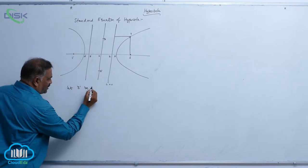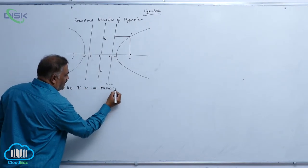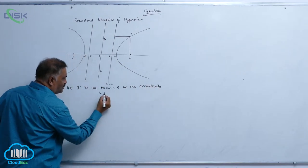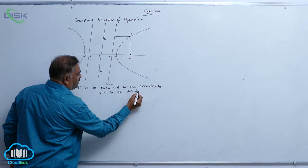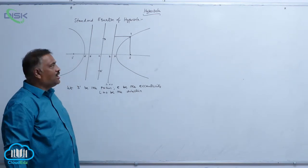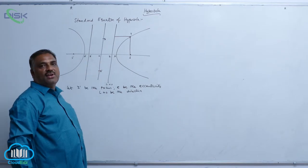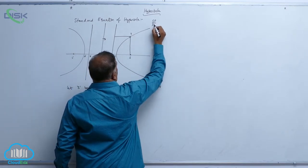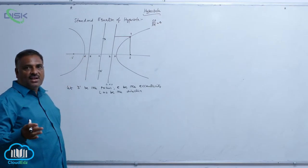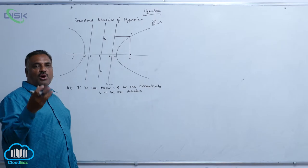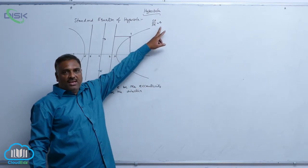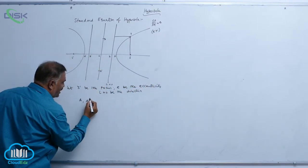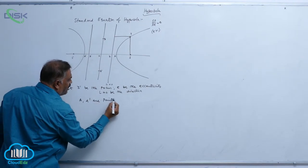Let S be the focus, E be the eccentricity, and L equal to 0 be the directrix. As usual, we claim that A and A dash are points on the conic if and only if they satisfy the condition SP by PM equal to E. That means the distance of the point to the focus and the distance of the point to the directrix must be in the ratio E, where E is greater than 1. We will say that A and A dash are points on the curve.